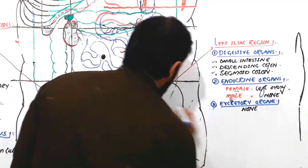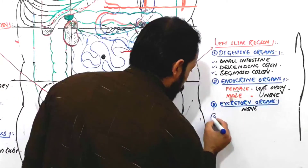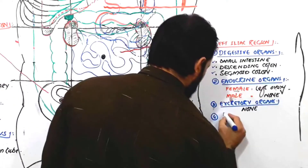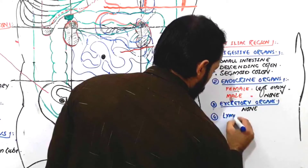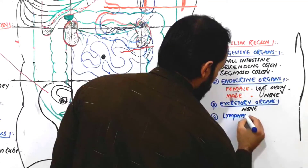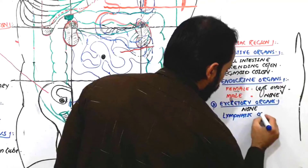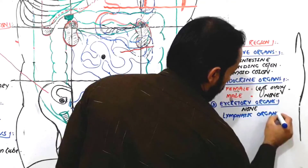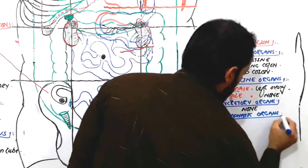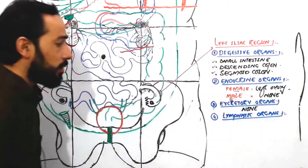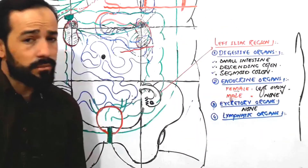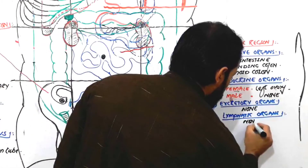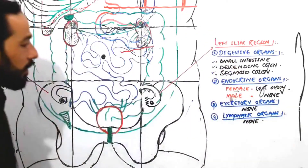The fourth group of organs are the lymphatic organs. Are there any lymphatic organs present in the left iliac region? None — we know there are lymphatic nodes, but there is no lymphatic organ present there.